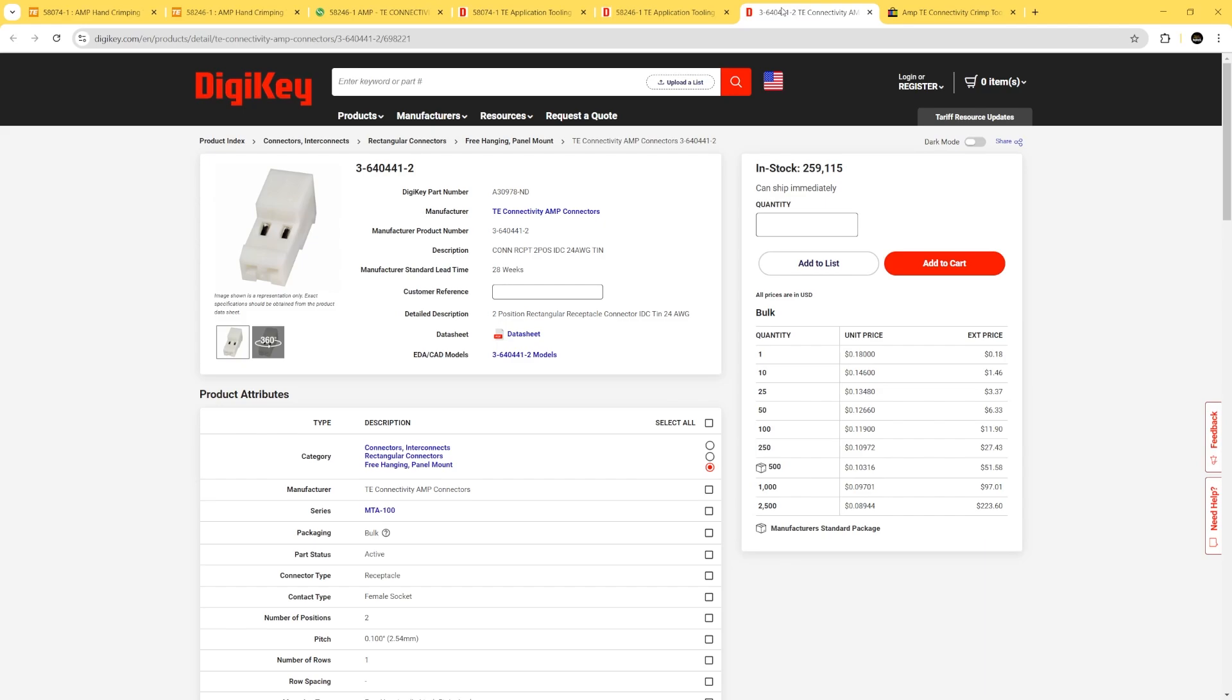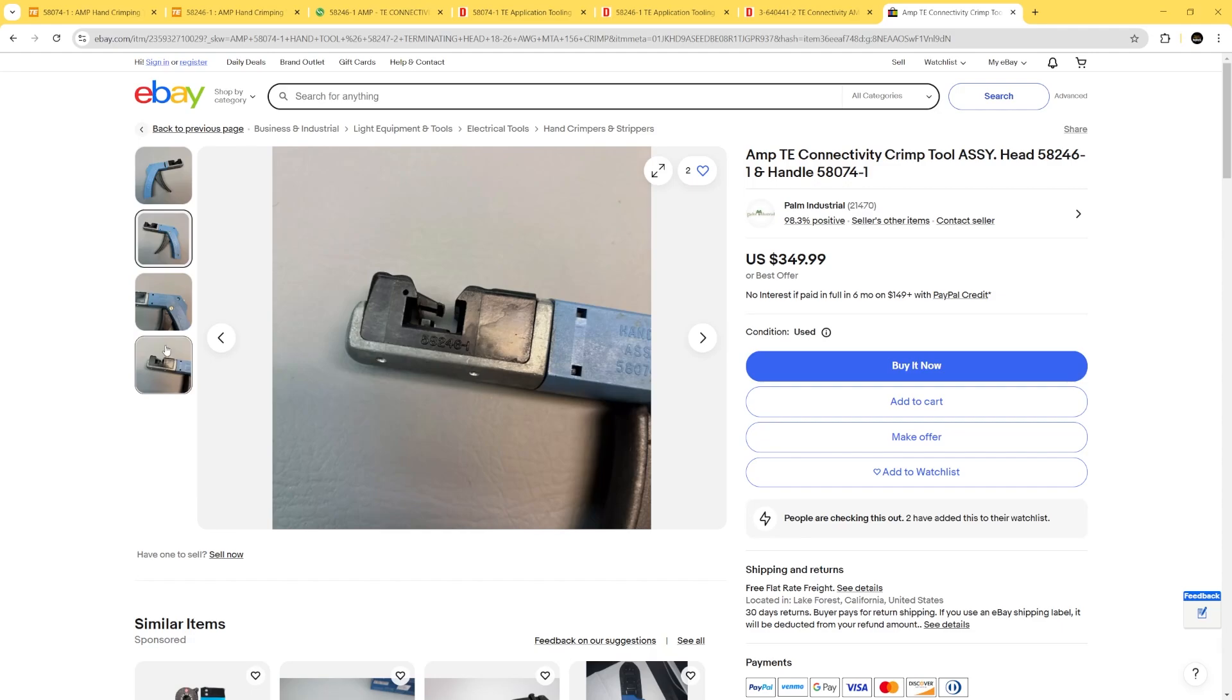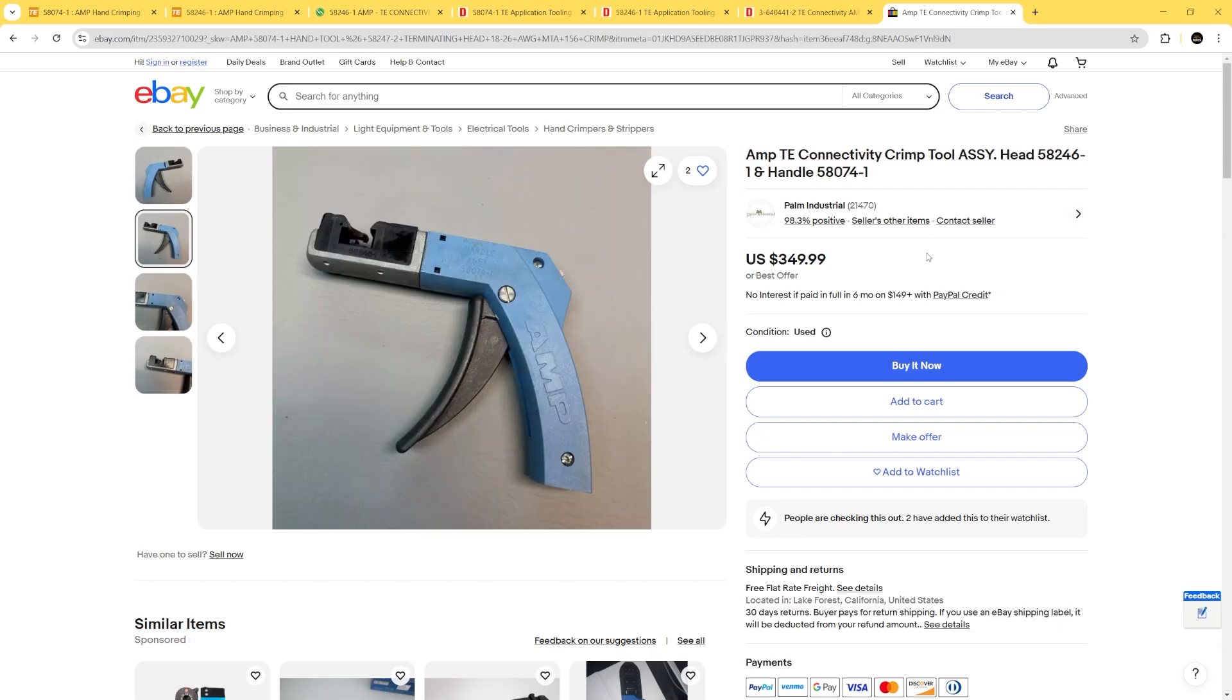Digikey does have a good resource for the quick plug receptacle heads there. You can get about 100 of them for 12 bucks. So that's not bad. A little bit more research. I found they have one on eBay right now. And that's from Palm Industrial for $350 for both the head and the handle. And they are the exact same part numbers. So if you're interested, jump on over there and grab it.